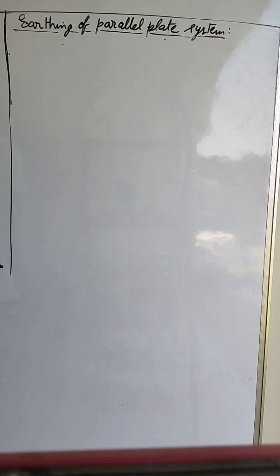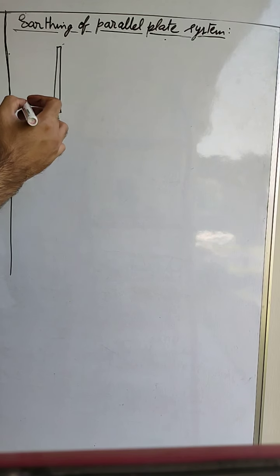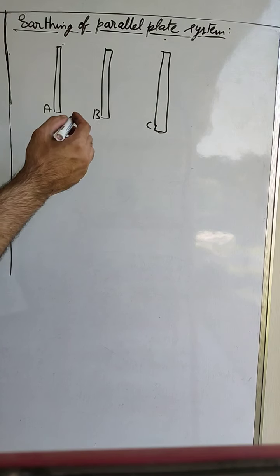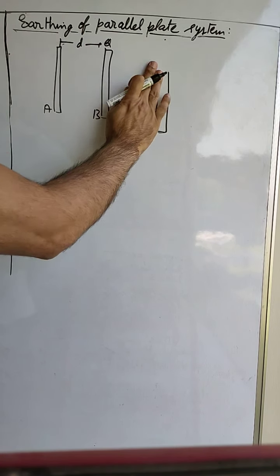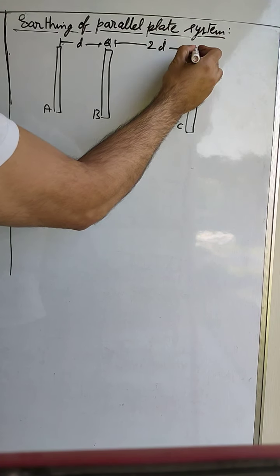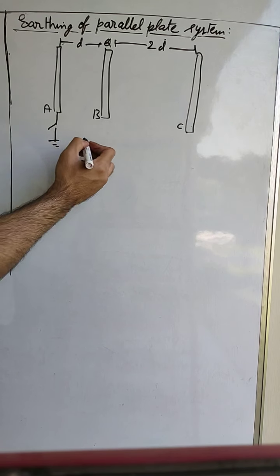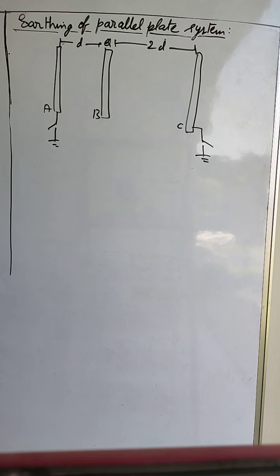Let us do a question on the topic of parallel plate systems that we discussed in the previous video. We have three parallel plates A, B and C, in which only B has a charge Q. The distance between A and B is D and the distance between B and C is 2D. A and C are connected to earth.